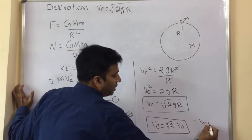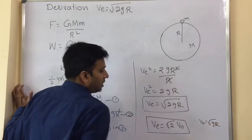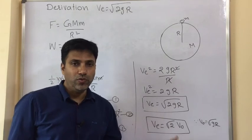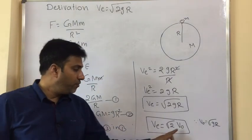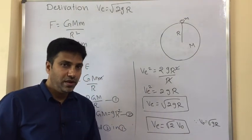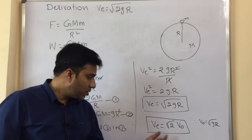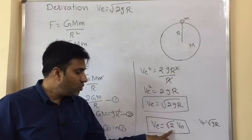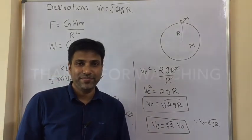Since v_o is equal to root gR, we can write v_e is equal to under root 2 times v_o. So this is the relation between v_e and v_o. From this we can make one point that escape velocity is root 2 times the orbital velocity.